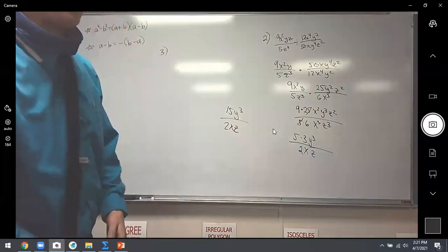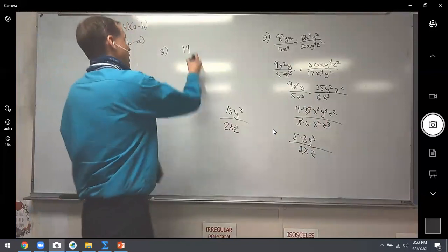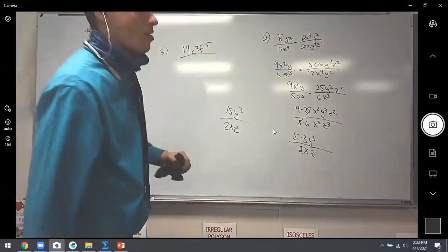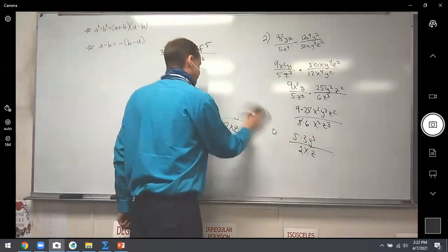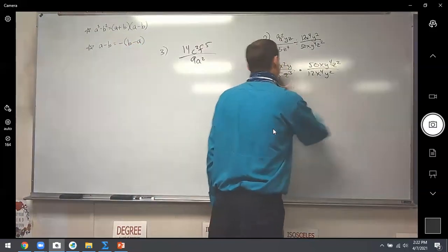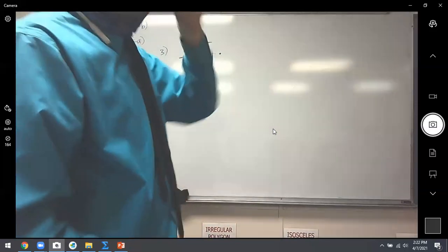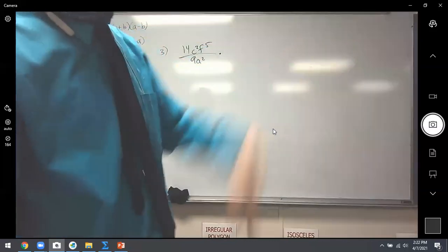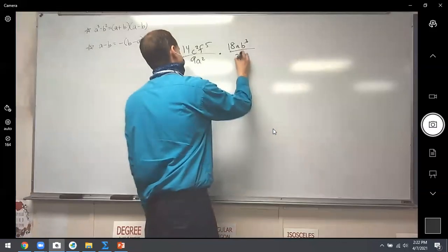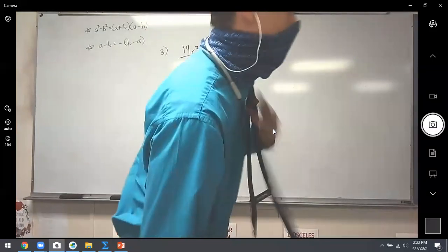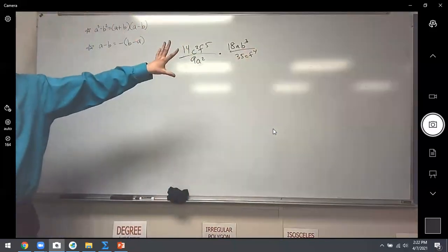They take some time, don't they? All right, last one today — number three. We have 14c² f⁵ over 9a². And that's all divided by a fraction — so what should I do right at the start? Let's just multiply by the reciprocal. The problem isn't displayed in the video I'm recording, but if you flip the second one, it turns out to be 18ab³ over 35cf⁴. So all we did was keep, change, flip.